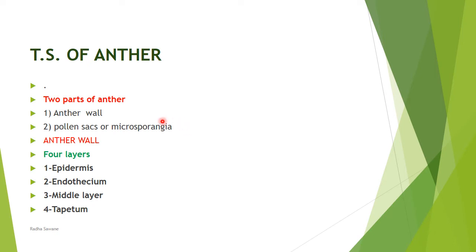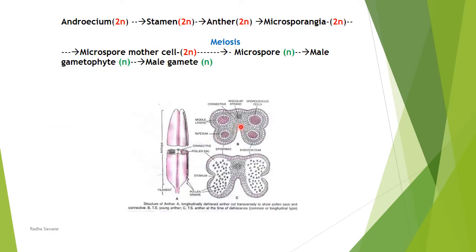Anther consists of two parts: anther wall and microsporangia or pollen sacs. The anther wall comprises four layers: epidermis, endothecium, middle layer, and tapetum. The outermost is epidermis and the innermost is tapetum.